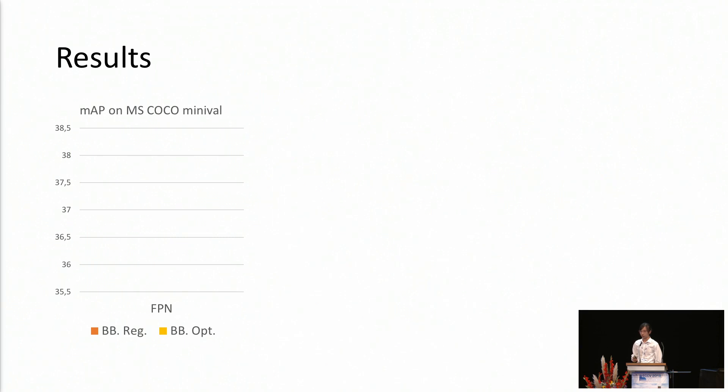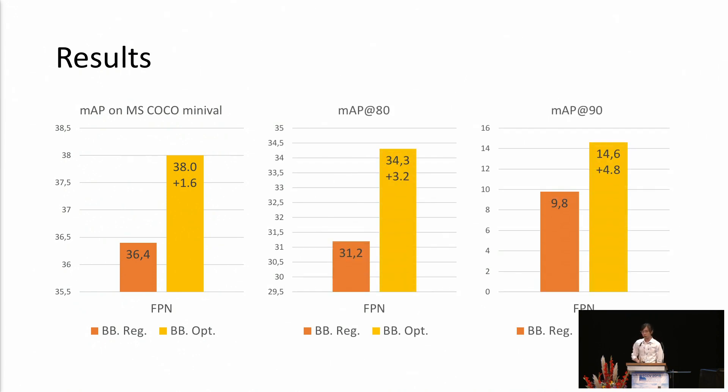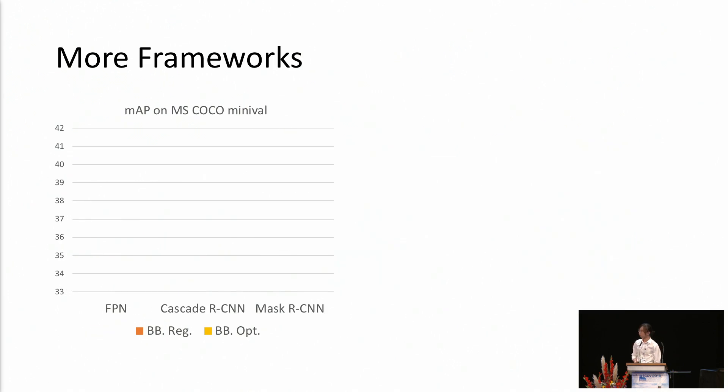Here comes the quantitative results. We compare our method with the original bounding box regression using the FPN on the MS-COCO dataset. And also, if we look at the MAP with high IOU threshold, we can see a larger gap. Also, this algorithm is not restricted to only FPN. Actually, we can apply it on top of, for example, Cascade R-CNN or Mask R-CNN and achieve state-of-the-art performance.